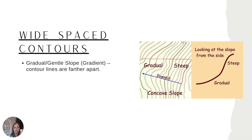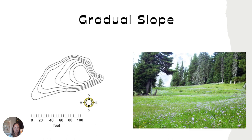Here's another look at wide-spaced contour lines. On the right you have a steeper slope, and on the left a more gradual slope where the contour lines are further apart. Sometimes this happens in a meadow setting where elevation increases very gradually, so on the map it doesn't look as extreme as Half Dome or El Capitan.